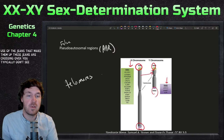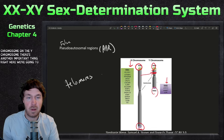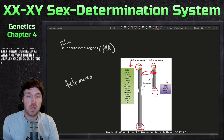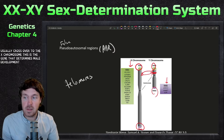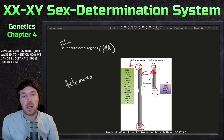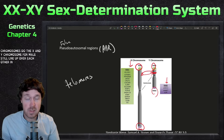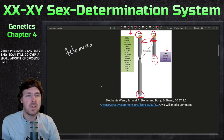You typically don't see crossover events occurring in the non-PAR regions of the chromosomes. On the Y chromosome there's an important gene that doesn't usually cross over to the X chromosome — this is the gene that determines male development. The X and Y chromosomes for males still line up in meiosis I, and there can still be a small amount of crossing over in the pseudo-autosomal regions.